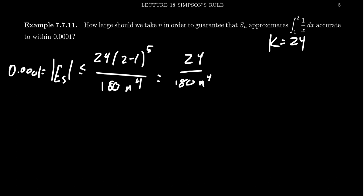So multiply both sides by 180. So we're going to get 0.0001 times 180N to the 4th should be less than 24. Then we want to solve for N. So divide both sides by 180. I guess I want to move it back to N to the 4th. We're going to get 24 over 180.